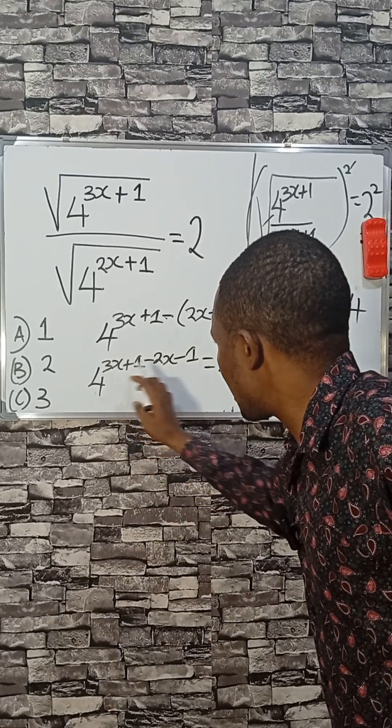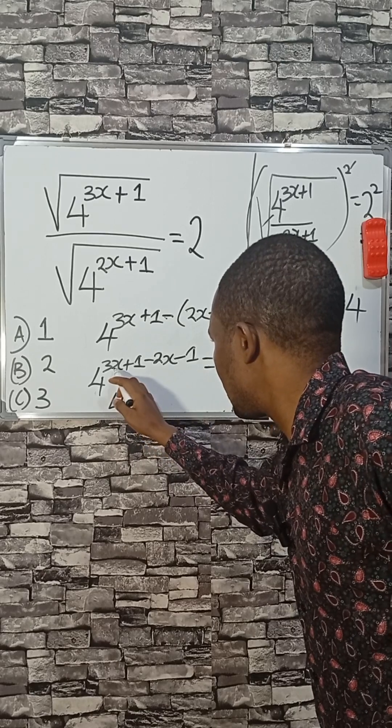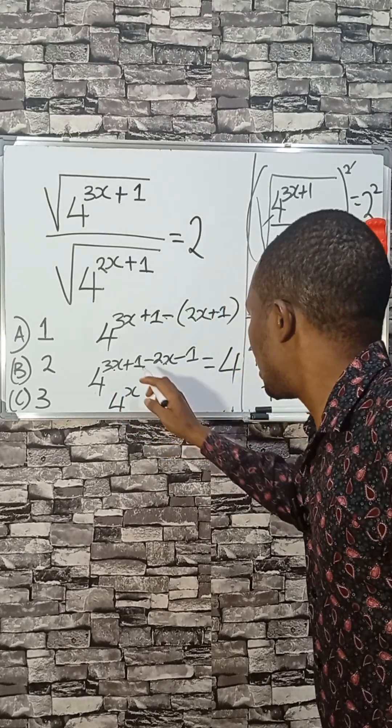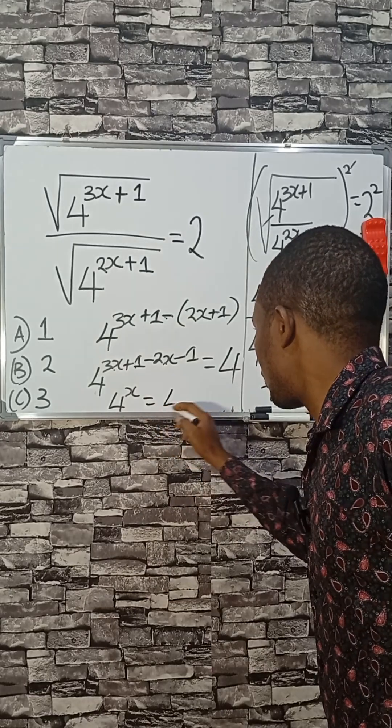You check closely. 3x minus 2x, that is x. x is left there. 3x minus 2x, that is x is left. Then, 1 minus 1, that is 0. So, equals to 4.